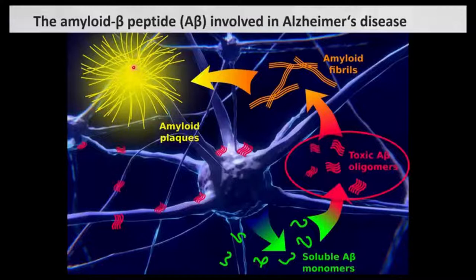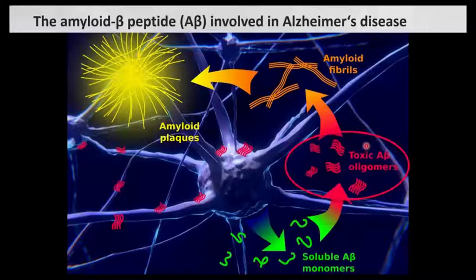For a couple of years, until around 2000 to 2010, the focus really had been on the plaques and fibrils. But then people realized that the fibrils are not that toxic — it's more the oligomers which are toxic. The oligomers are quite small, ranging from dimers to around dodecamers. The fibrils are still important because they're the defined endpoint with a nice structure, but if one really wants to target the disease progression, one needs to target the oligomers.